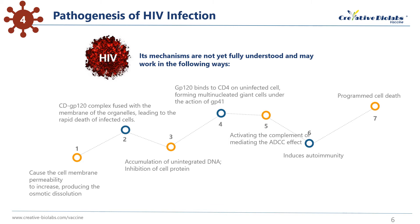6. HIV induces autoimmunity. For example, there is a homologous region between GP41 and MHC2 molecules on a T4 cell membrane, and the anti-GP41 antibody can cross-react with these lymphocytes and lead to cell destruction. 7. Programmed cell death — the activation of apoptosis during the onset of AIDS. For example, GP120 of HIV binds to CD4 receptor and directly activates apoptosis of infected cells. Even the envelope antigen expressed by T cells infected with HIV can activate normal T cells, and indirectly destroy the apoptotic CD4-positive cells through the cross-linking of CD4 molecules on the surface of the cells, resulting in severe immune deficiency centered on the defect of T4 cells.